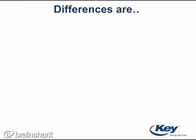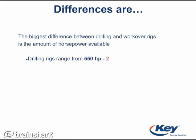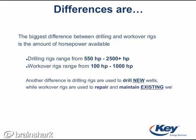Although there are several differences between drilling and workover rigs, one of the most notable is the distinct difference in power level. A drilling rig can exert power up to 2,500 horsepower and beyond, while a workover rig maxes out around 1,000 horsepower. Also, drilling rigs are used on new wells and workover rigs are used on existing wells, primarily for maintenance.